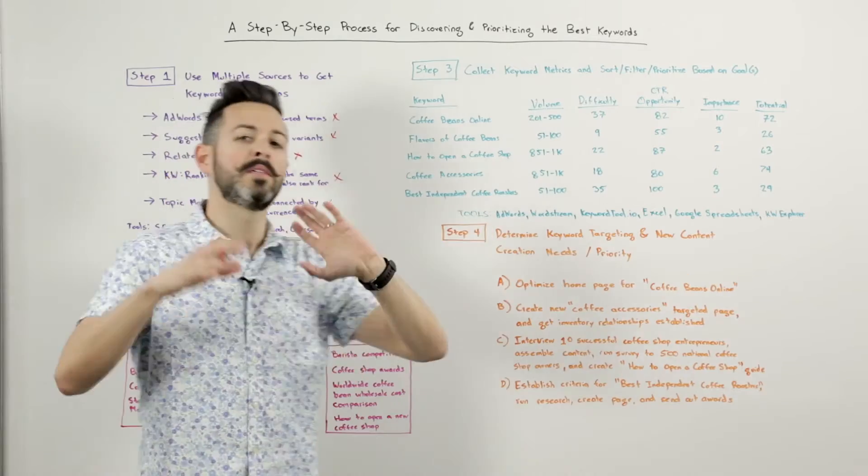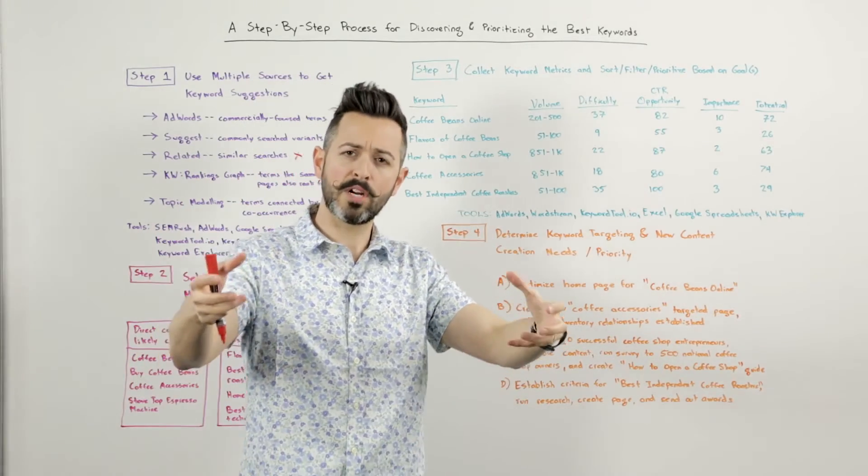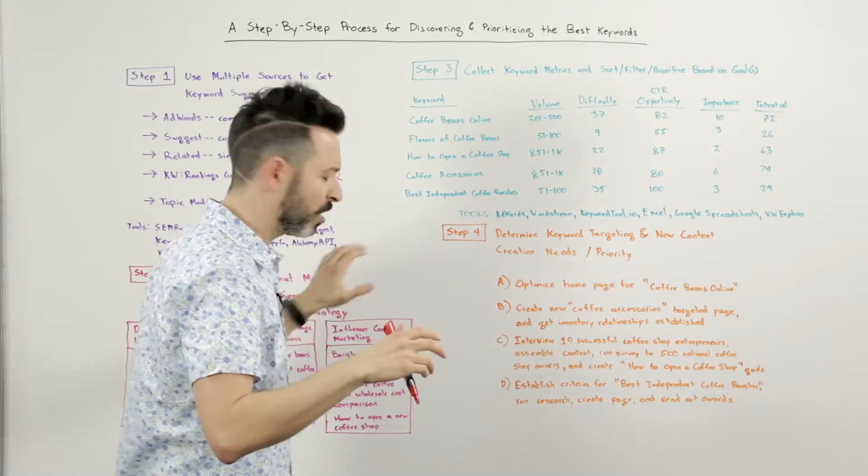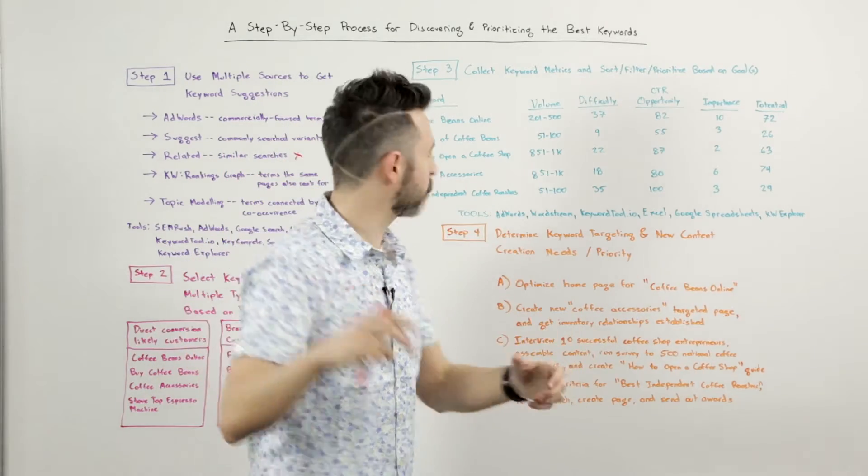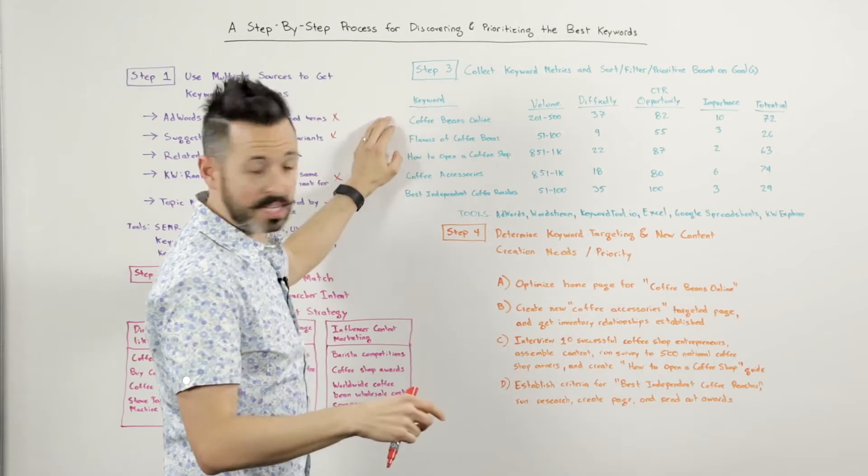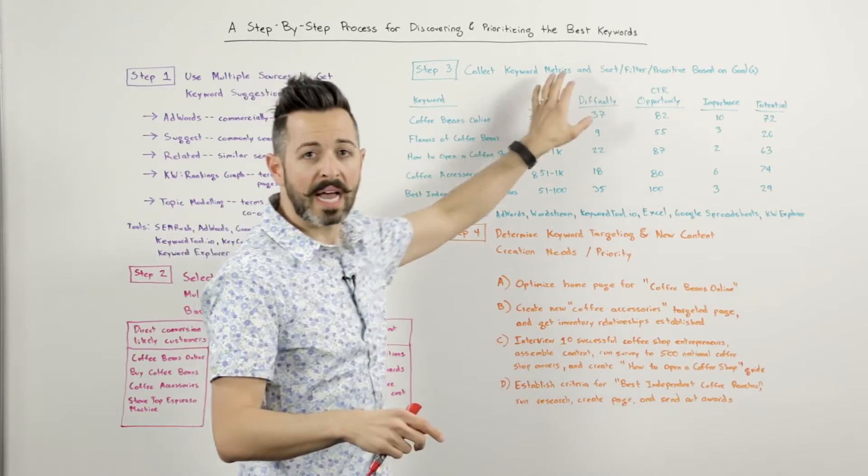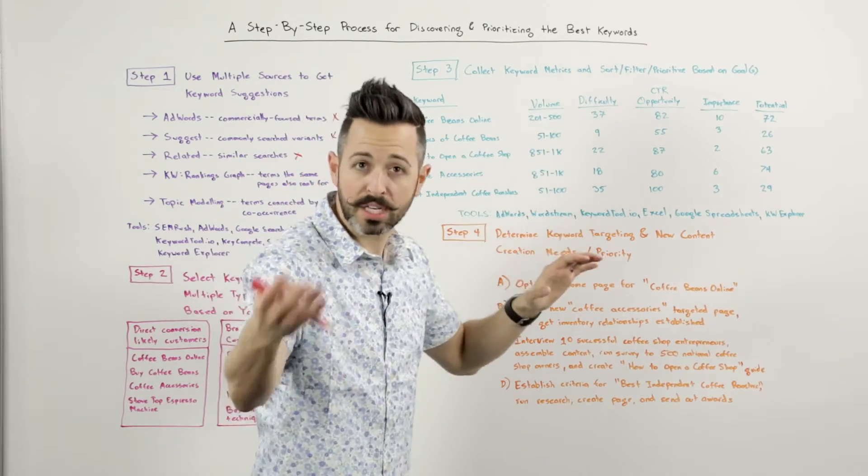Step three. This is where we have to get very data-driven. Because what I want to do is I want to take all the keywords in each of the lists that I have and I want to get the metrics for them so I can prioritize properly. So what I've done here is I've taken a list of keywords.